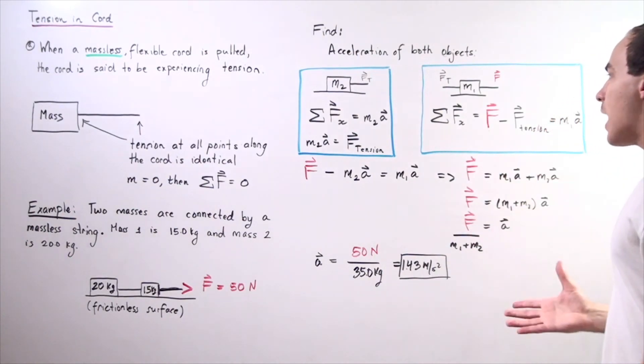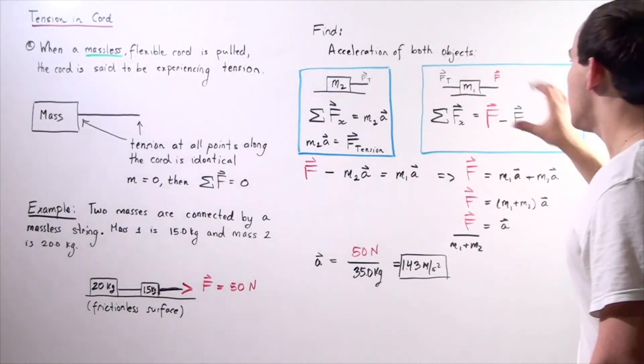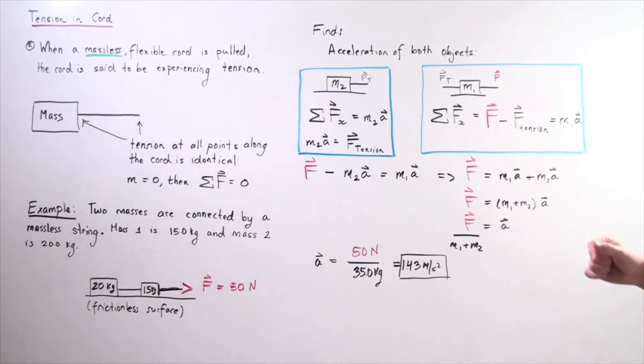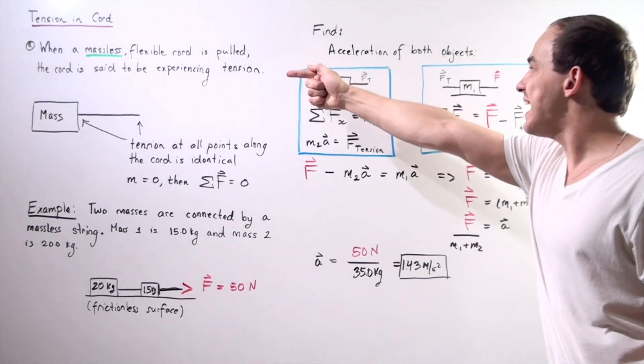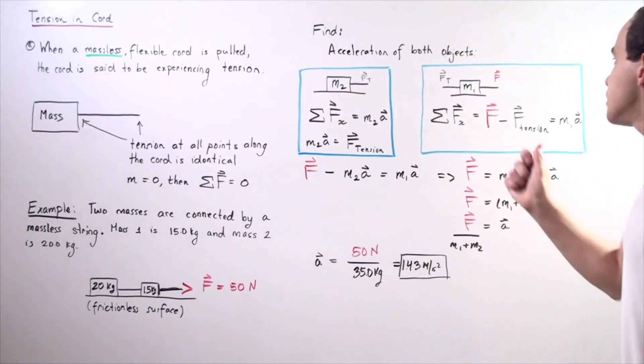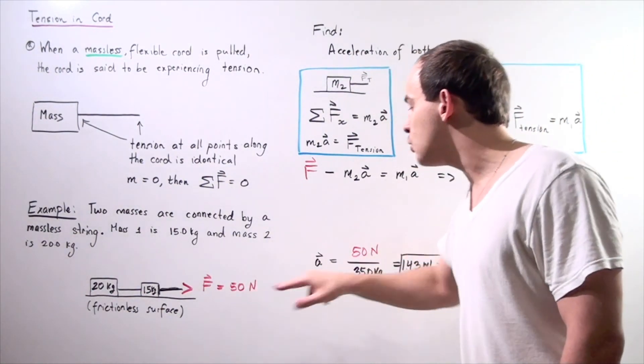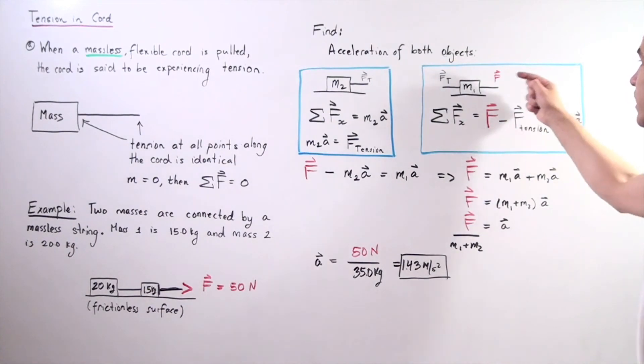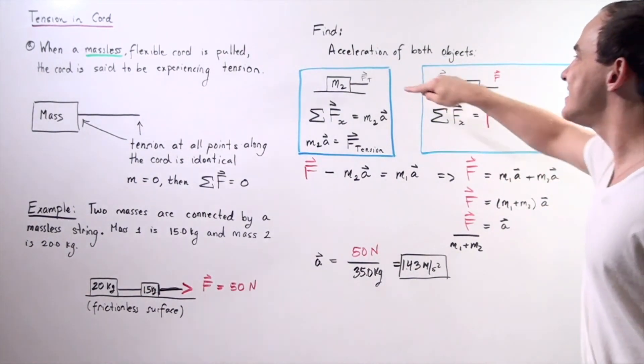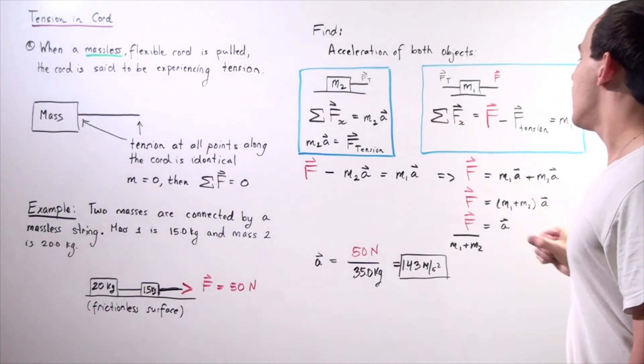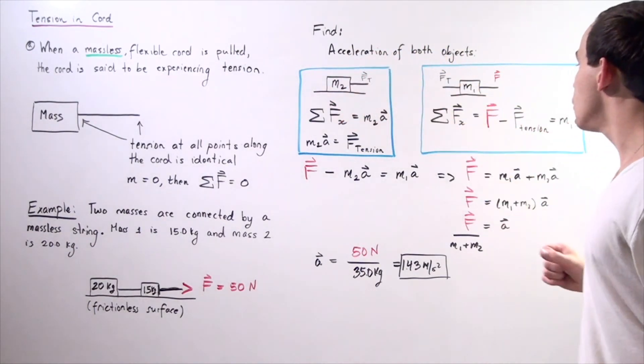Now let's draw our force diagram for object number one, mass one. This object has two different forces. One force is pointing in the negative direction and the second force is pointing in the positive direction. The force pointing in the positive direction is our 50 newton force. The force pointing in the negative direction is the tension in the cord due to mass number two.